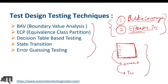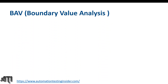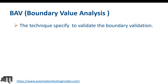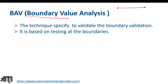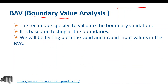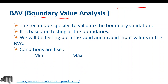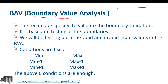Let's talk about boundary value analysis. This technique is specified to validate boundary validations — the name itself says boundary value analysis. We test the application for a particular field on its boundaries. It is based on testing at the boundaries, and we test both valid and invalid input values. The conditions are: minimum, maximum, minimum minus 1, minimum plus 1, maximum minus 1, and maximum plus 1 — six conditions in total.